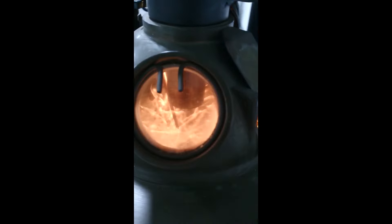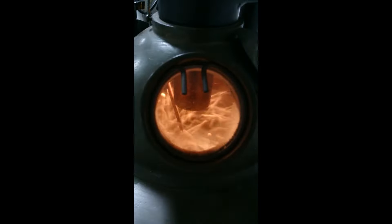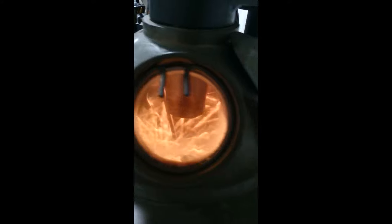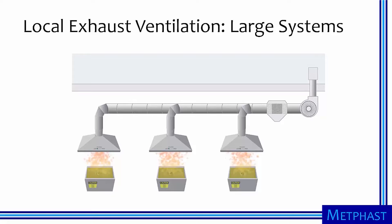However, there are also some drawbacks to using a centrifugal roaster. The beans may not receive as much direct heat as in other types of roasters, which can result in a less intense flavour. Additionally, the spinning motion can generate a significant amount of heat and smoke, requiring proper ventilation to prevent fire hazards.